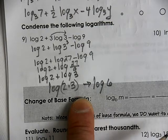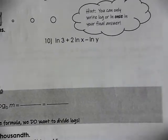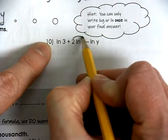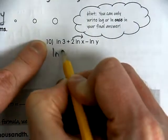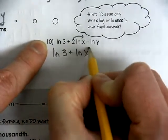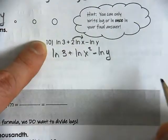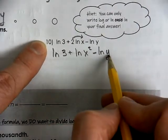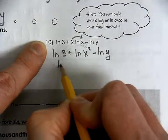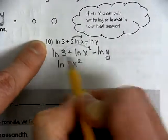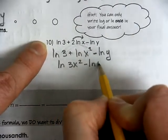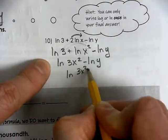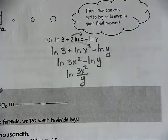Now let's try condensing with variables. We use the same properties. The power property applies first: natural log of 3 plus natural log of x² minus natural log of y. Combining the addition terms: natural log of 3x². Then subtracting two logarithms means division, giving the natural log of (3x²/y).